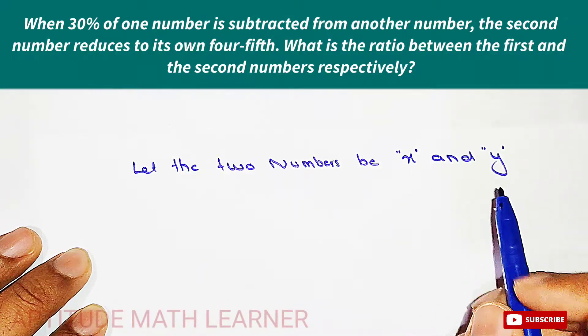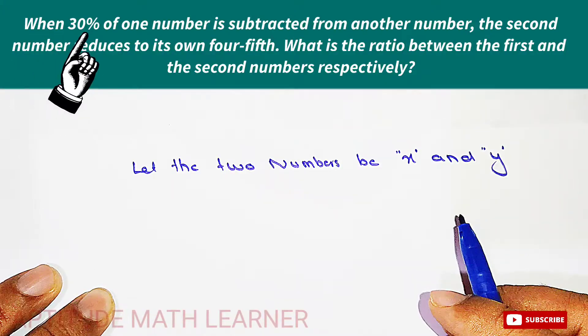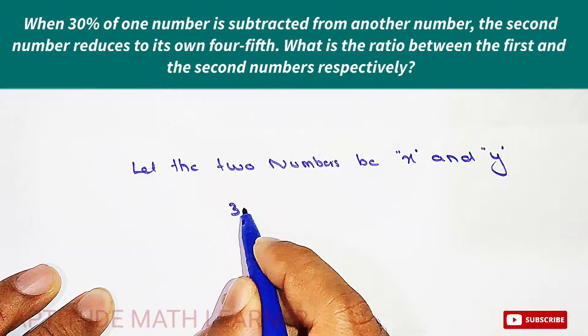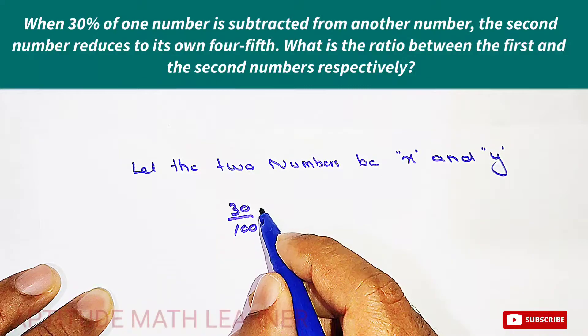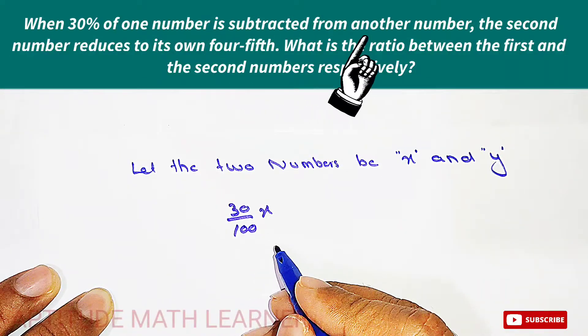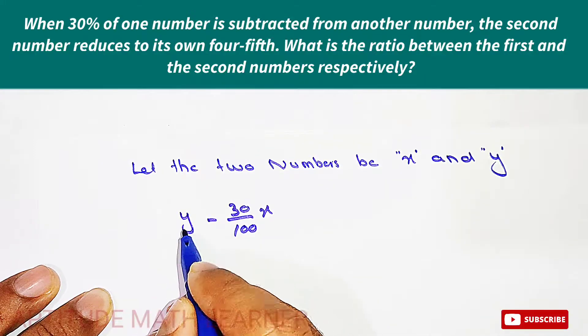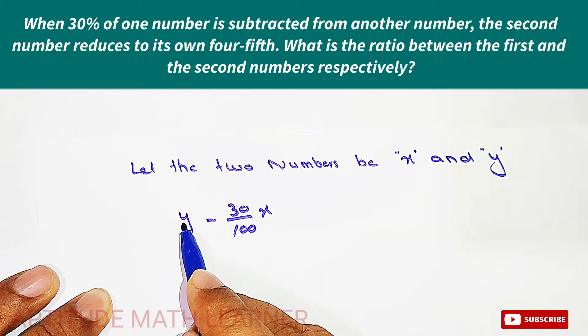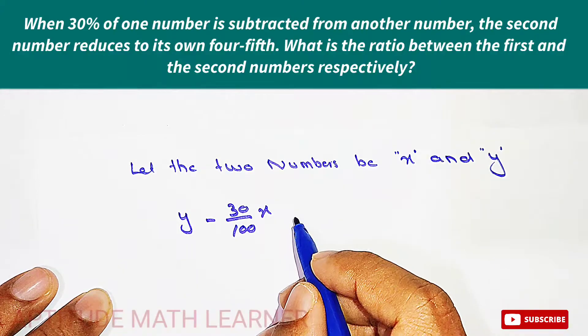Now in the question it says when 30 percent of one number, so here we take 30 percent, 30 divided by 100, of one number is subtracted from the another. So this is subtracted from the another number, so the first number is subtracted from the second number.